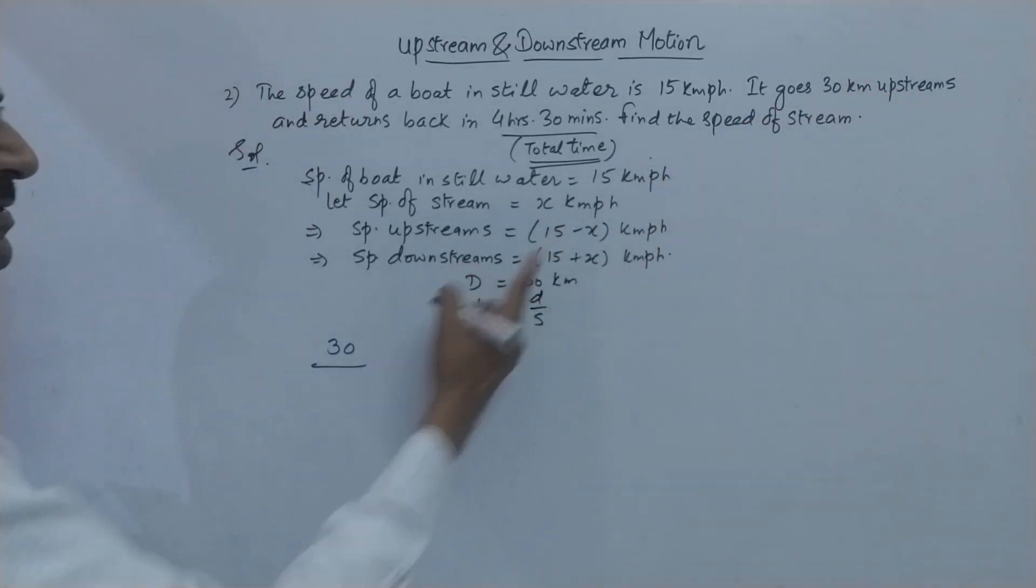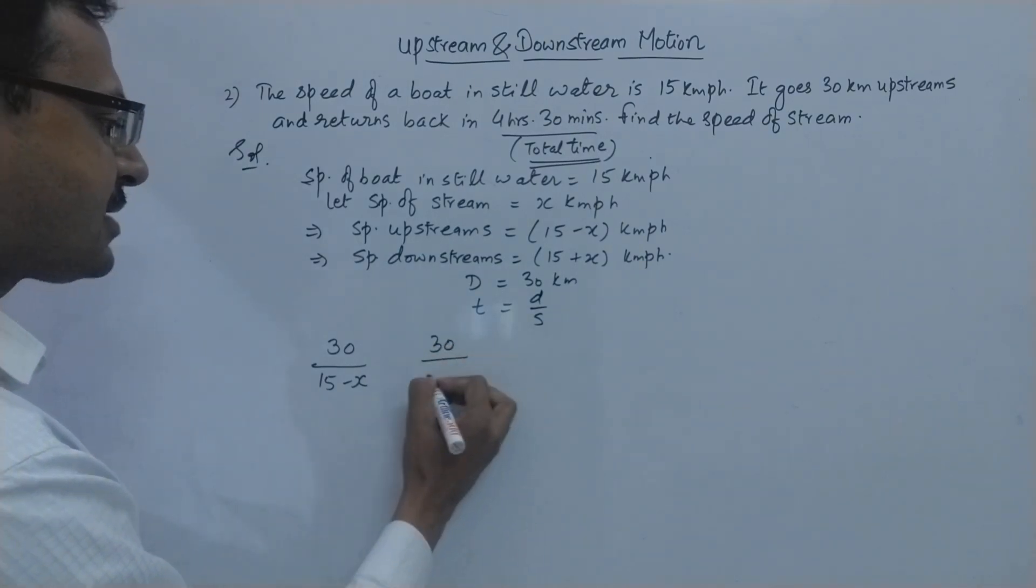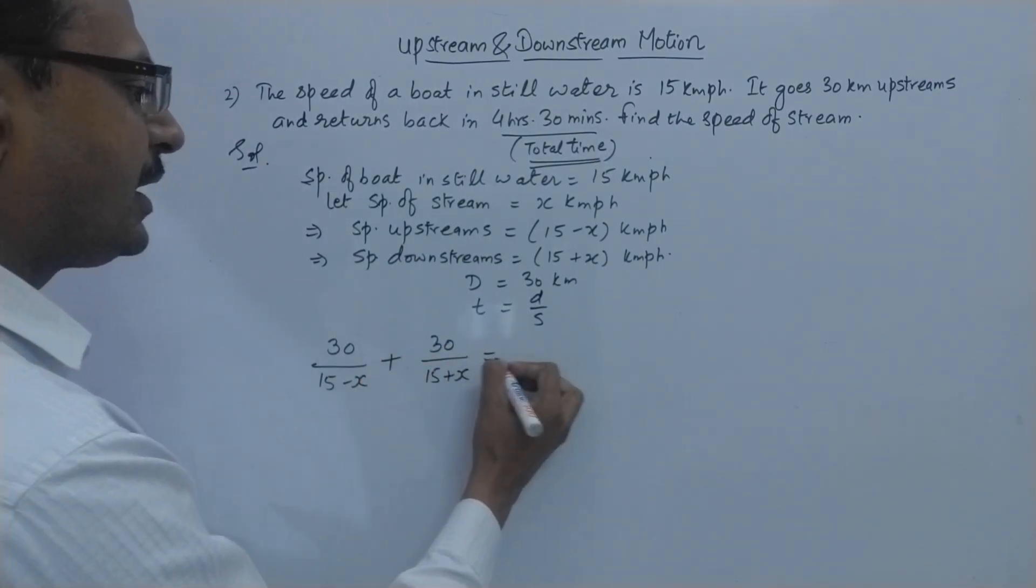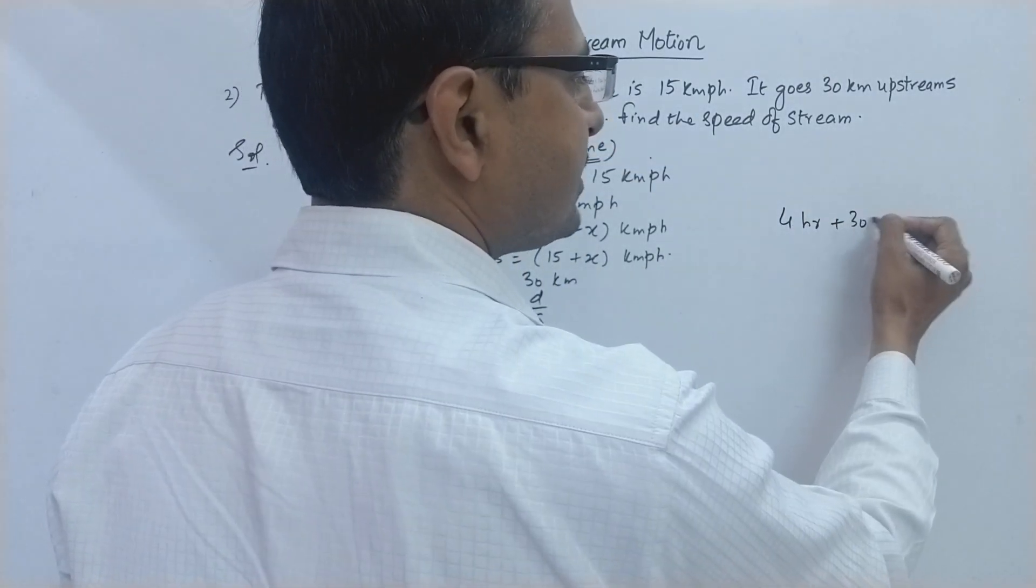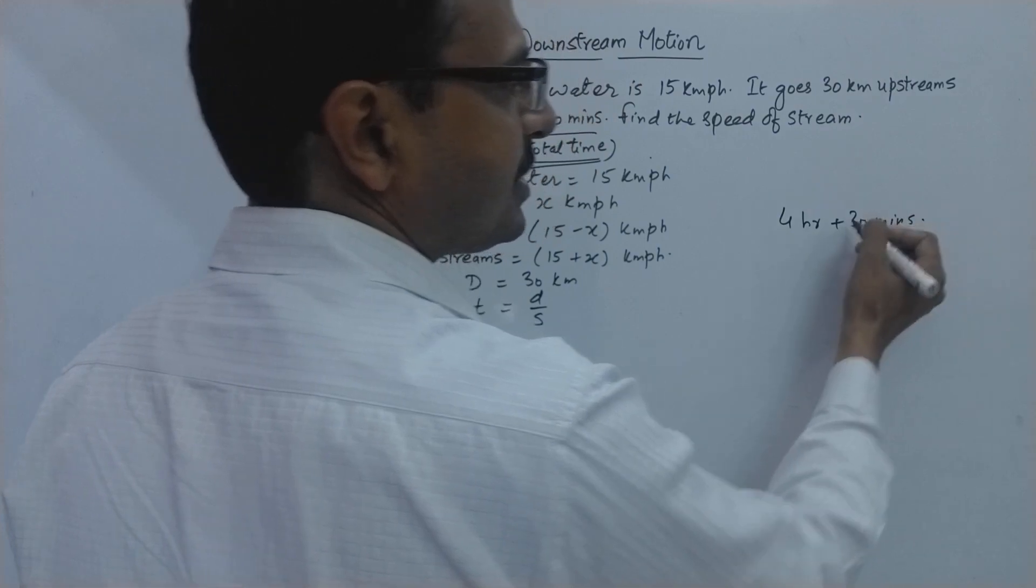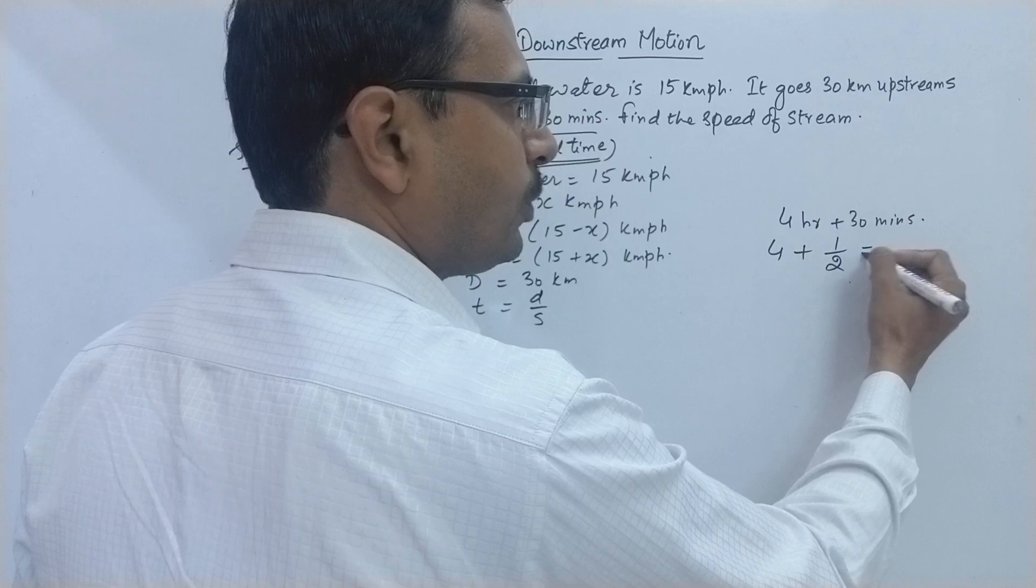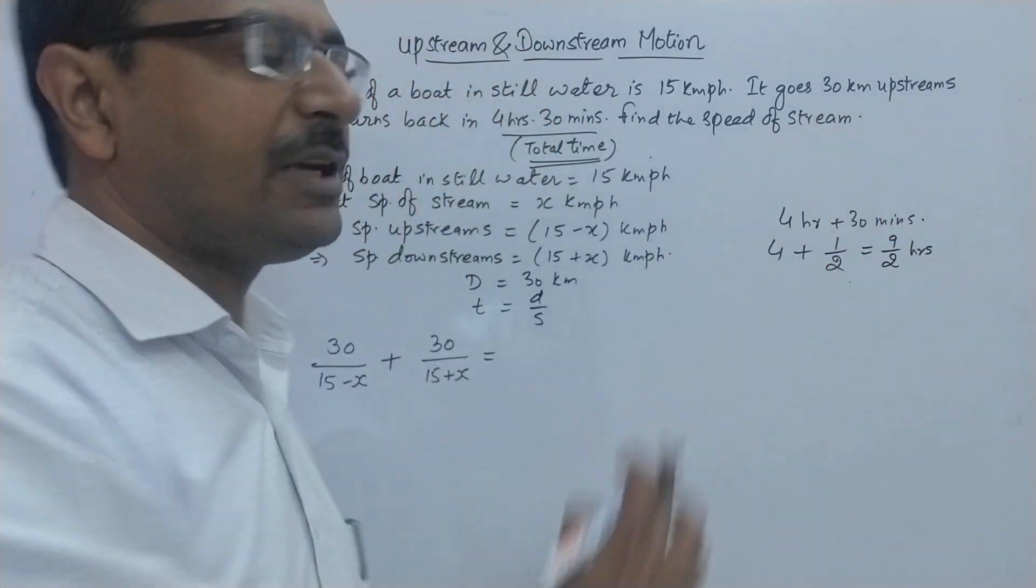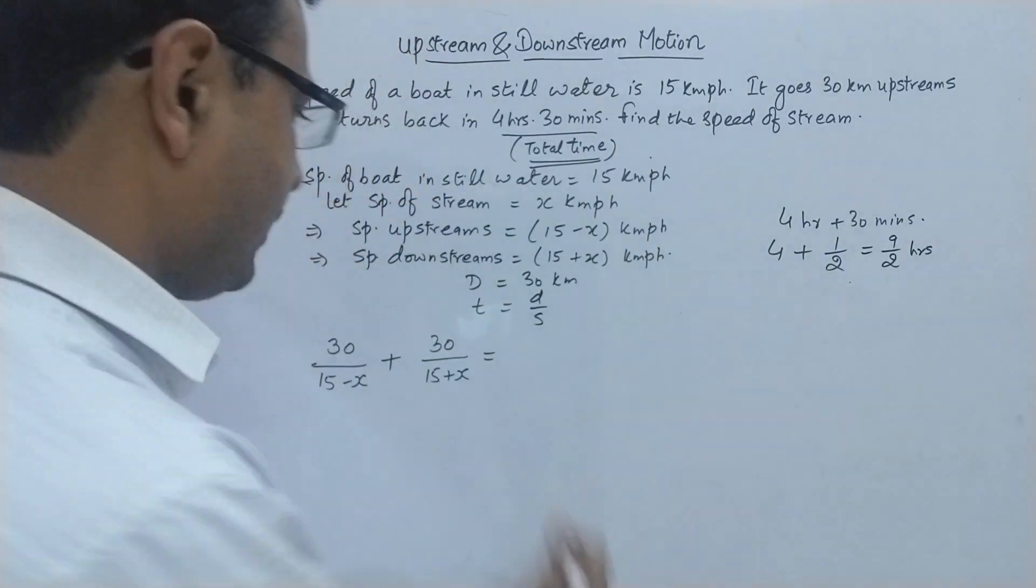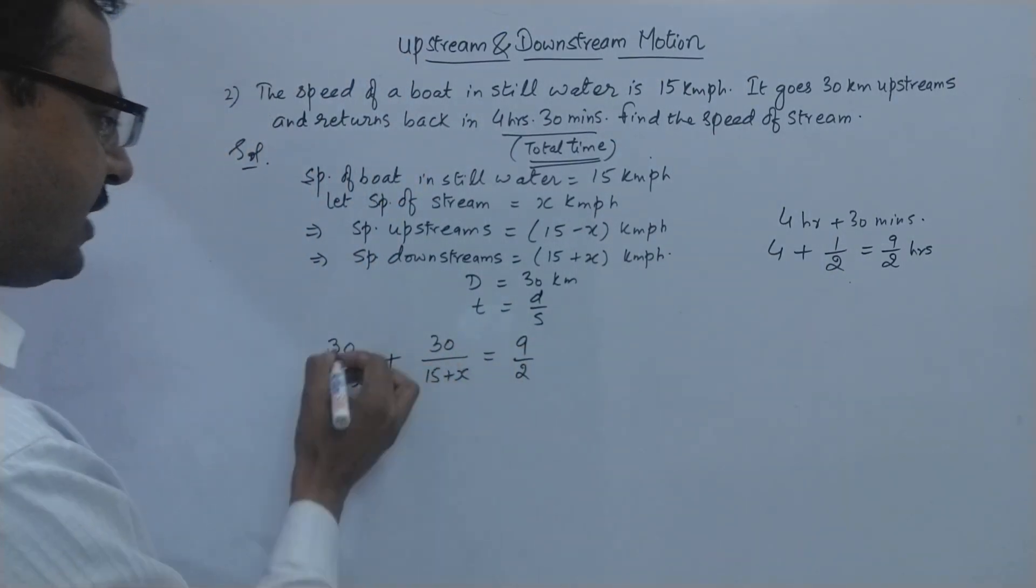And speed downstream will be 15 plus x kmph and the distance given in this case is 30 km. And the formula to be used is distance upon speed. Now distance is 30 kmph and while going it is going upstream so upstream speed is 15 minus x and while returning it is coming with a speed of 15 plus x. And the total time given is 4 hours plus 30 minutes. What is 30 minutes? 30 minutes is half hour. So this comes out to be 9 upon 2 hours. So I have converted 4 hours 30 minutes to hours.